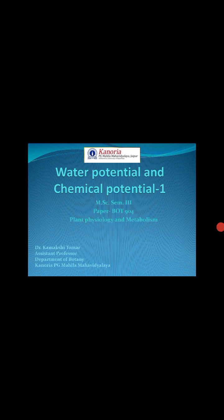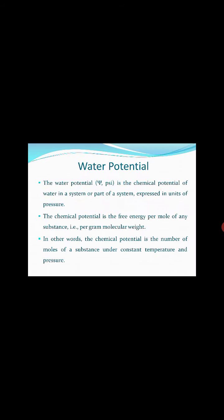Hello students, today I will be speaking about water potential and chemical potential, and this is a part of plant physiology and metabolism. First of all, we should know what water potential is. Water potential is denoted by psi, and it is the chemical potential of water in a system or part of a system, expressed in units of pressure. Chemical potential is the free energy per mole of any substance, that is, per gram molecular weight.